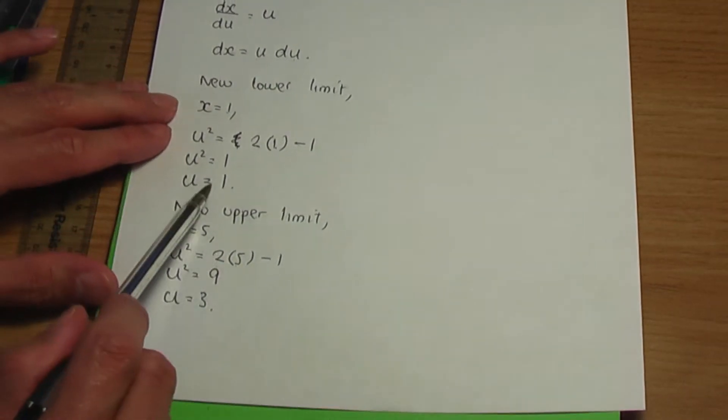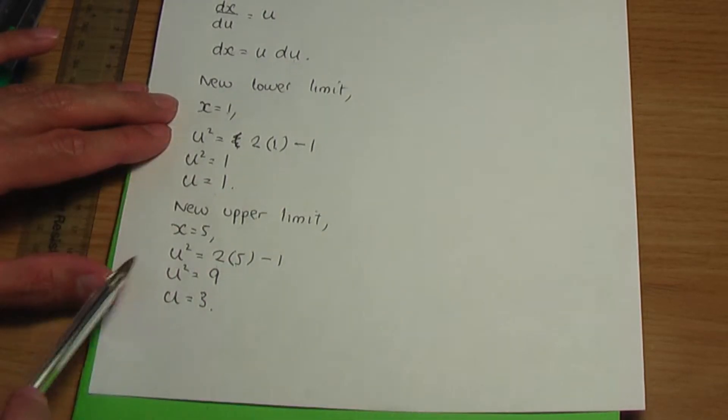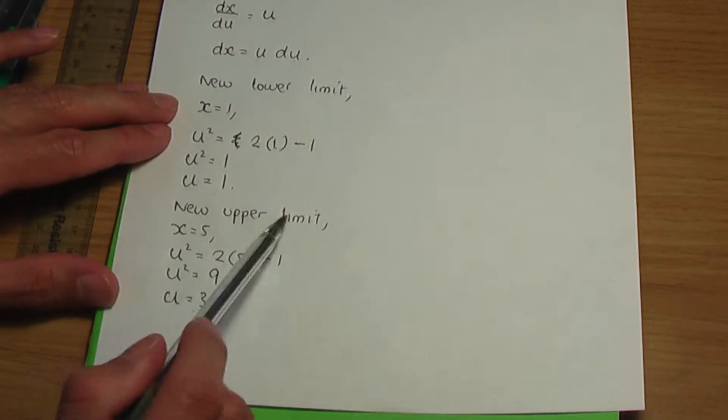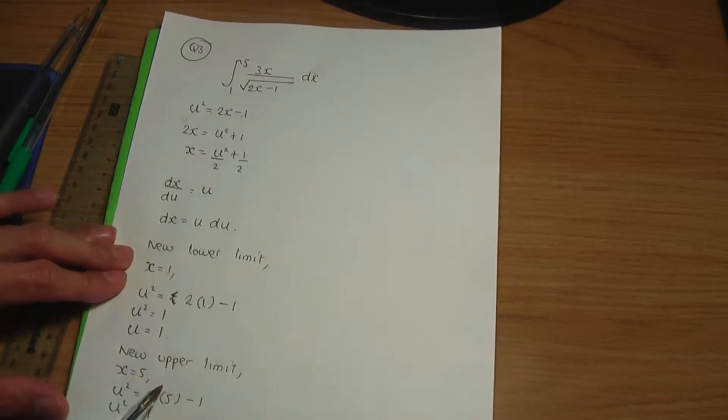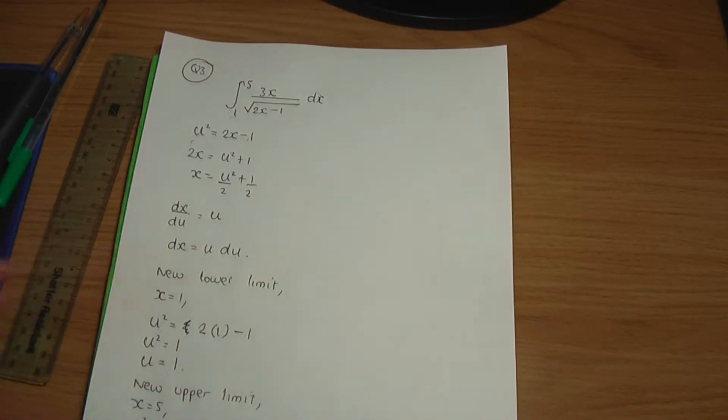So, in this case, 1 being the new lower limit, 3 being the new upper limit. With this in mind, let's rewrite this integral. Let me continue on the reverse.